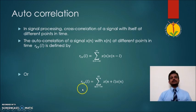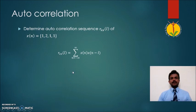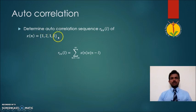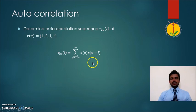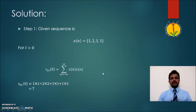Similarly, the equation of autocorrelation can be given by an alternative formula. Let us calculate the autocorrelation of a simple sequence x(n) = {1, 2, 1, 1} with itself. Here we are using the standard equation for autocorrelation. Let us solve this step by step.